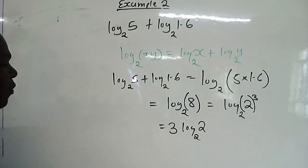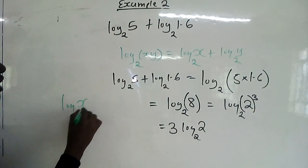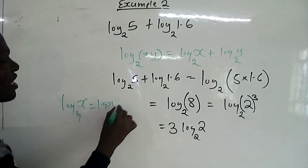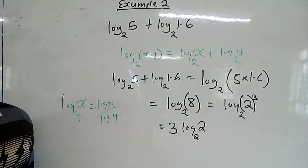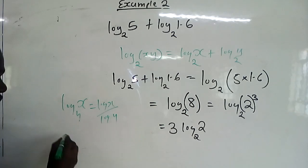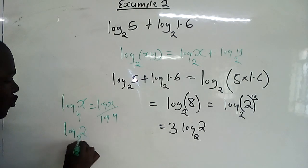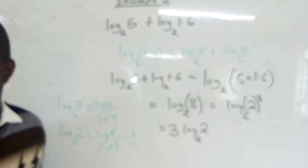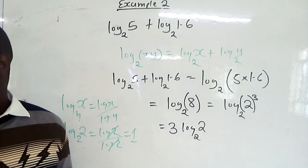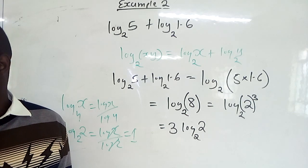Remember, when you have log_y(x), that is the same as log x over log y. So when somebody gives you log₂2, that is the same as log 2 over log 2. Log 2 cancels with log 2, you remain with 1. Meaning a log of a number to the same base is always 1.